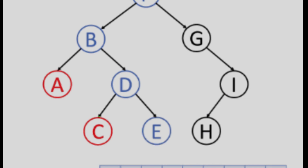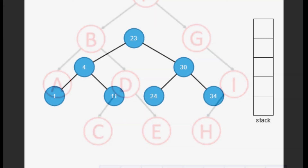Operations of data structures: Traversing means visiting each element of the data structure in order, going from one element to the next, to perform some specific operation like searching and sorting.